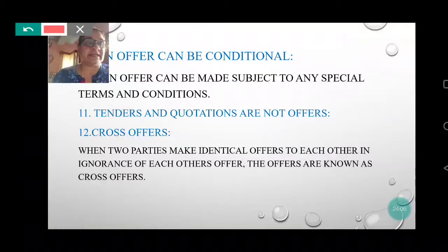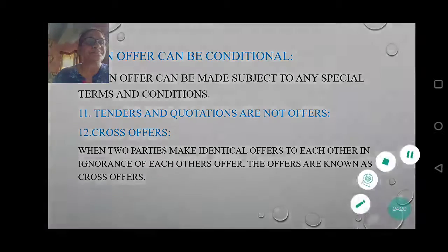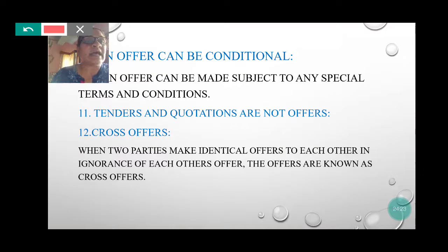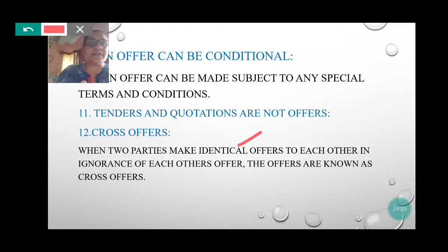The last essential is cross offer. When two parties make identical offers to each other in ignorance of each other's offer, the offers are known as cross-offers. Cross offers do not constitute a valid contract.